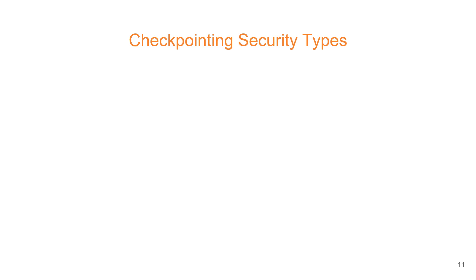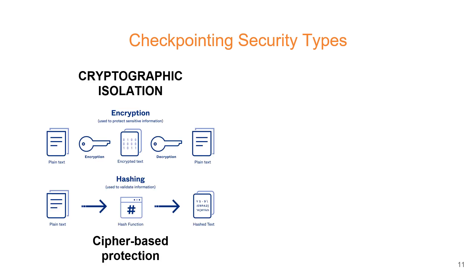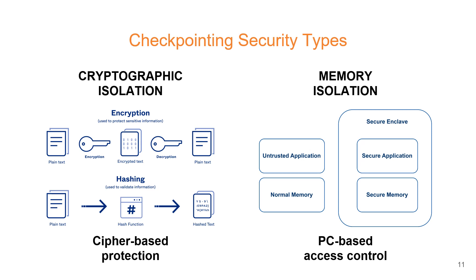Now let's talk about the crux of the paper, which surveys the different checkpointing security types. The paper observes that secure checkpointing techniques fall under one of two categories depending on how the checkpoints are isolated. The first is cryptographic isolation, which uses some form of encryption and hashing for providing confidentiality, integrity and authentication. The second is memory isolation, which uses some form of program counter-based access control to isolate the memory containing sensitive code and data.